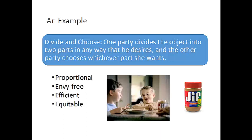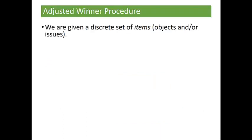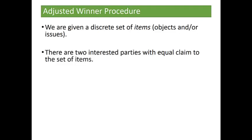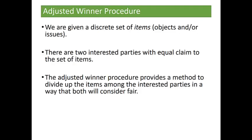For the rest of this video we're going to focus on another procedure besides divide-and-choose: the adjusted winner procedure. Here we're given a discrete set of items. These could be physical objects — like a TV and a radio if you and your roommate move out — or they could be issues, such as dividing up class size, classroom resources, and pension in a teacher strike. There are two interested parties with equal claim to the set of items, and the adjusted winner procedure provides a method to divide up these items in a way that both will consider fair.